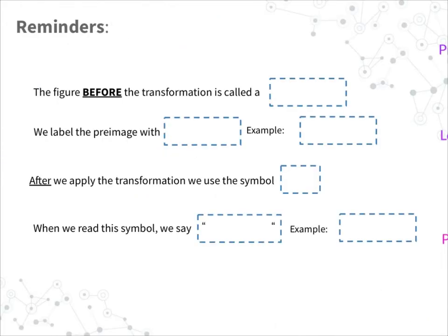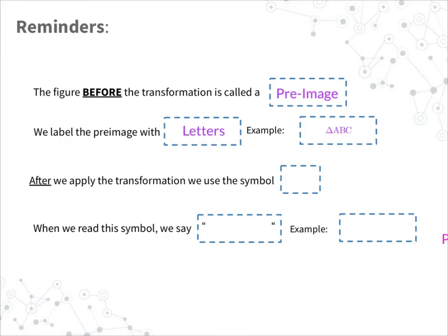Before we get started, we have a few reminders. The figure before the transformation is called the pre-image. We label the pre-image with letters — for example, triangle ABC. After we apply the transformation, we use this symbol that looks like an apostrophe, a straight-up-and-down dash. We call this symbol prime. So for example, you'd have triangle A prime, B prime, C prime.